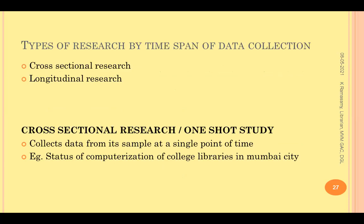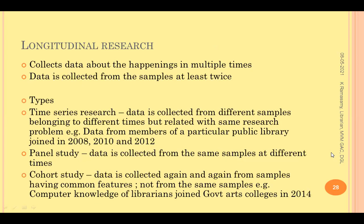Based on the time taken for data collection, we have cross-sectional research and longitudinal research. In cross-sectional research, you collect data from subjects only once throughout the completion of your research. For example, the status of computerization of college libraries in Mumbai city — you go once, collect data, and come back. In longitudinal research, you collect data from the samples more than once — at least twice. Longitudinal research can be categorized into three types: one is time series research, where you identify different groups by different time periods and collect data from them.